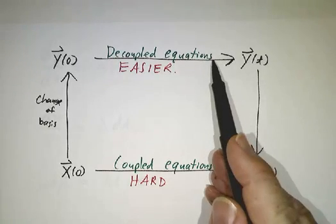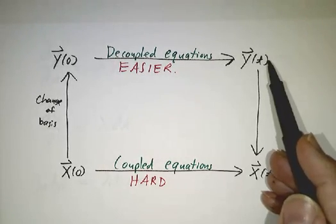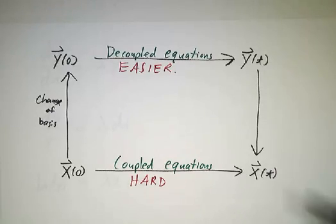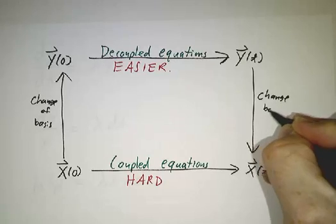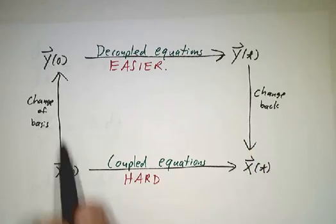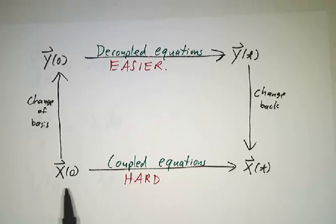We get our new coordinates, we have these decoupled equations which are easier than the coupled ones, we figure out what y is, and then we change back. So by going up the elevator, across the bridge, and down the elevator, we avoid going through the difficult area of the coupled equations.